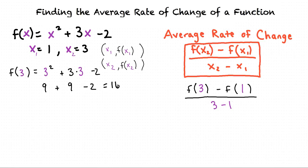Now let's do the same thing with f of 1. f of 1 equals 1 squared plus 3 times 1 minus 2. 1 squared is 1 plus 3 times 1 is 3 minus 2. 1 plus 3 is 4 minus 2 equals 2.